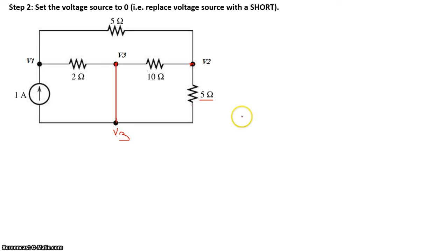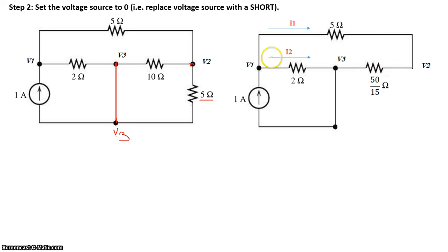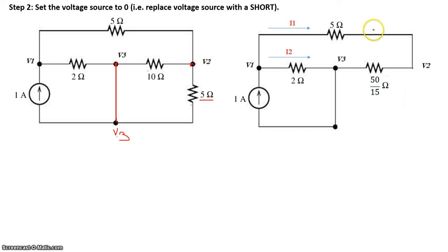So 10 times 5 equals 50, divided by 10 plus 5 equals 15, giving 50/15 ohms. This can be replaced with a single resistor between nodes 3 and 2. We have 1 amp coming into this node — call the currents I2 and I1. I1 travels through the 5 ohm resistor and the 50/15 ohm resistor, meaning the 5 ohm and 50/15 are in series.